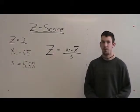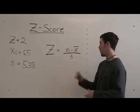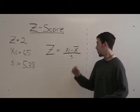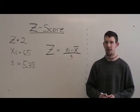If z is 2 and xi is 65 and the standard deviation is 5.38, this is how you solve for the x-bar.